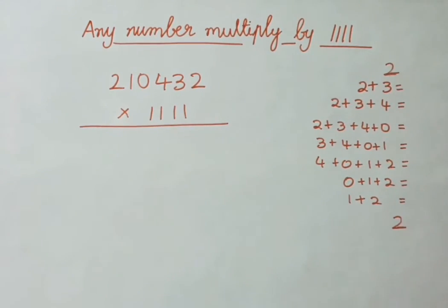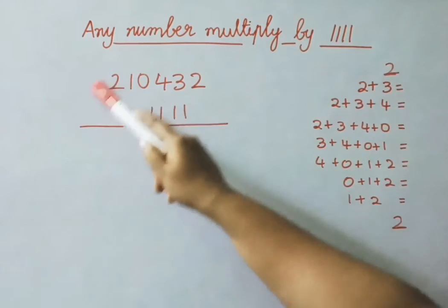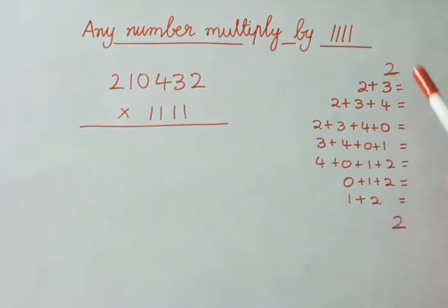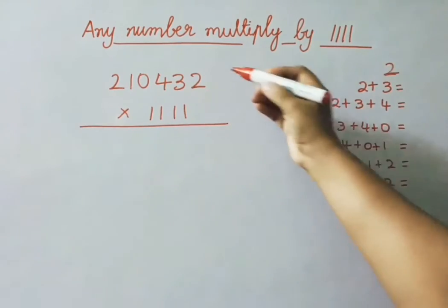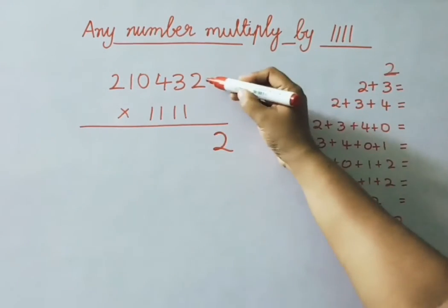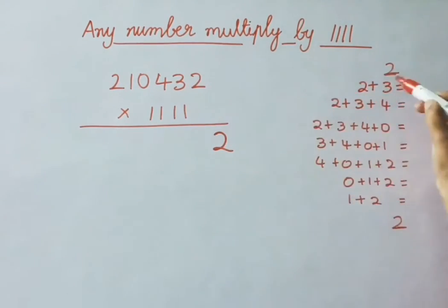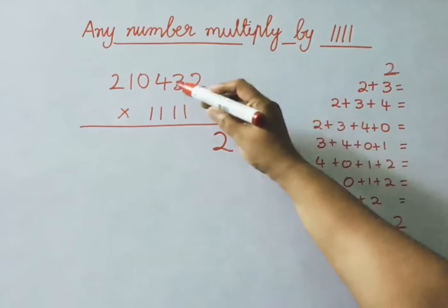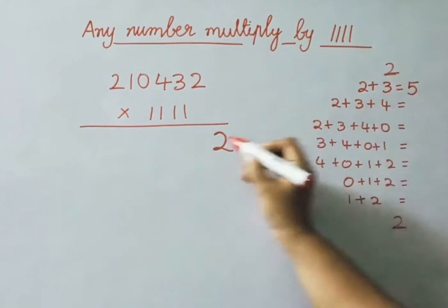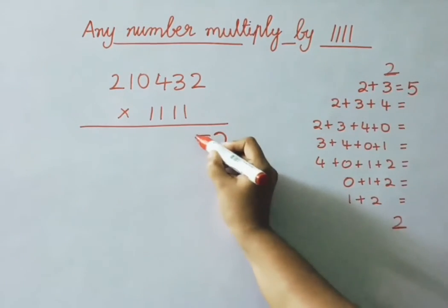So what we have to do is: the first number and the last number we will write the same. Then after, we will add in this way. First digit as it is, we will write. Next, add 2 digits: 2 plus 3. So 2 plus 3 is 5. Write down the 5 here.